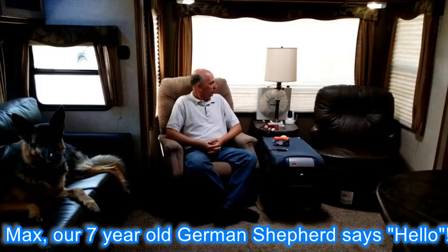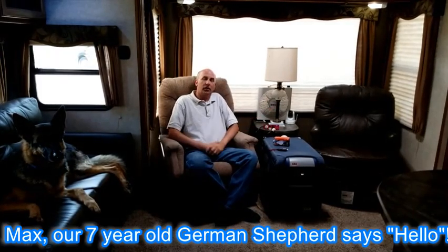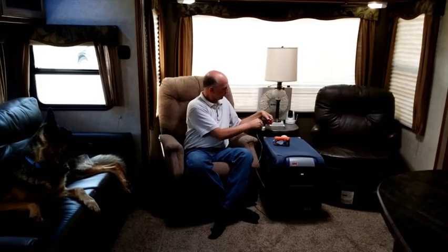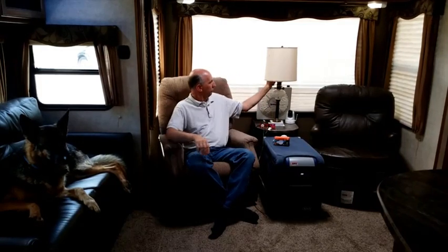I've now got the lamp back where it's supposed to be between our two chairs in our rear living room in our Sprinter travel trailer. And all that's left for me to do is plug it in and verify it works. So I'm simply going to take my 12-volt plug. I'm going to plug it into a 12-volt outlet. Reach up and turn the lamp on. And there it goes. This bulb is now running off of 12 volts DC.